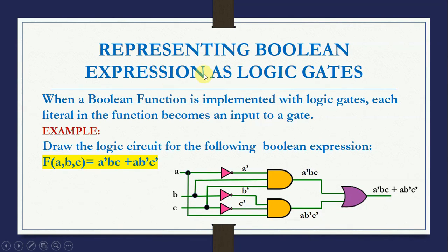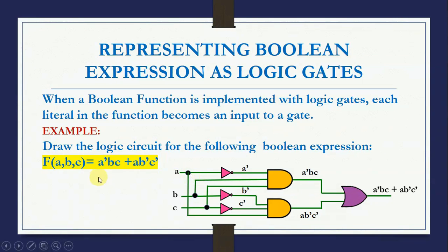Now let us represent boolean expressions as logic gates — this is very important and comes in exams. When a boolean function is implemented with logic gates, each literal or variable in the function becomes an input to a gate. We have to draw the logic circuit for the boolean expression f(A, B, C) = A̅BC + AB̅C̅.